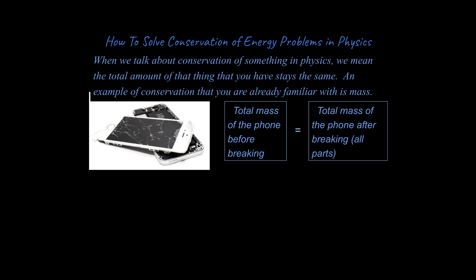You're familiar with the idea of conservation of mass. This is actually a really big idea in chemistry as well, and that is the total amount of mass you have before an event, like dropping a phone for instance, or a chemical reaction, is equal to the total amount of mass you have after the event. The only way it would change is if you had a nuclear reaction. We're not worrying about that right now.